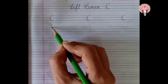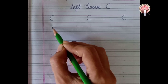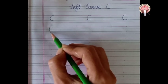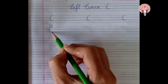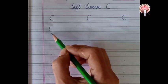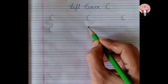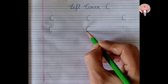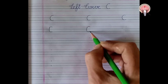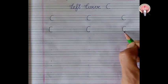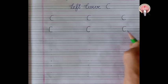Put your pencil on the dot, come down with the curve and join the dot. Left curve. Come down with the curve, left curve. Come down with the curve, left curve.